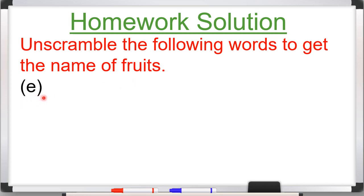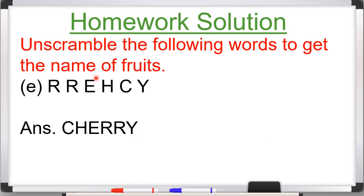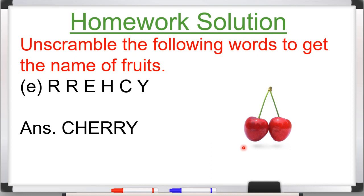Part E: R-R-E-H-C-Y. These alphabets are given in jumbled form. You have to arrange them in the correct order to form a fruit name. The answer is Cherry — C-H-E-R-R-Y. See the picture of Cherry here. Have you cross-checked the homework? Very good. Thank you.